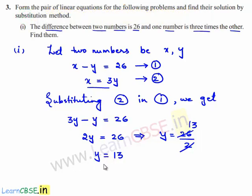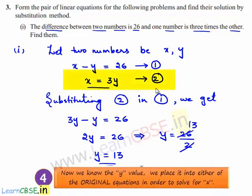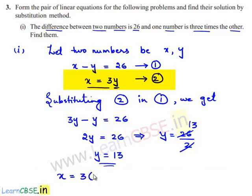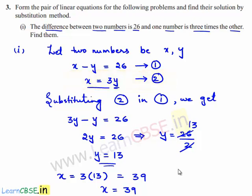Now substitute the value of y in equation number two. So this becomes x is equal to 3 times y, which is 13. Three times 13 is 39, therefore x is equal to 39. So the solutions of the given linear equations are x is equal to 39 and y is equal to 13.